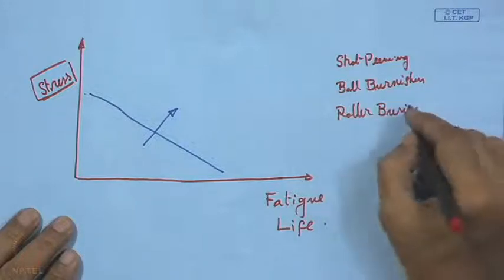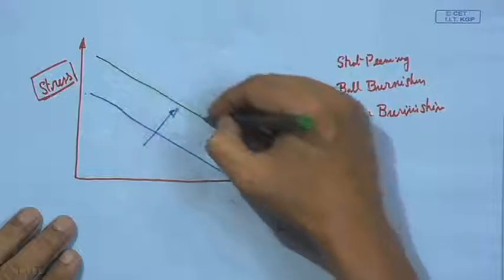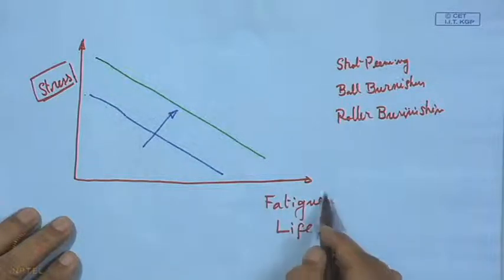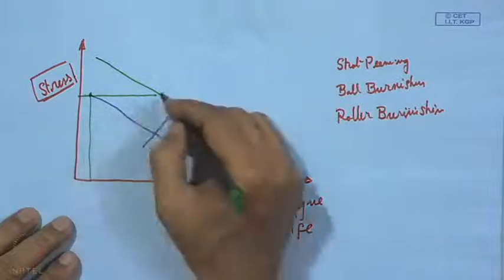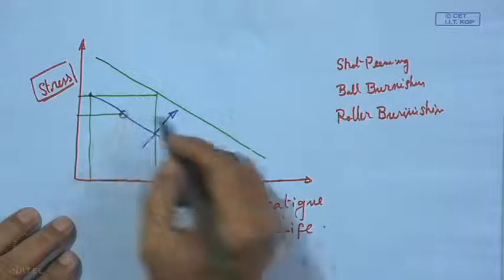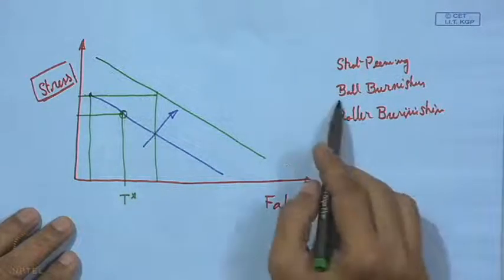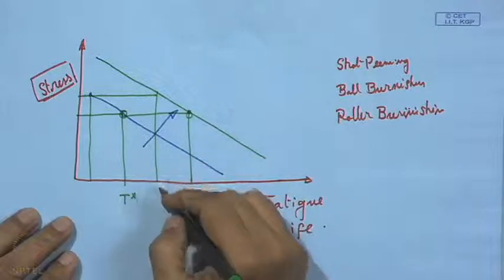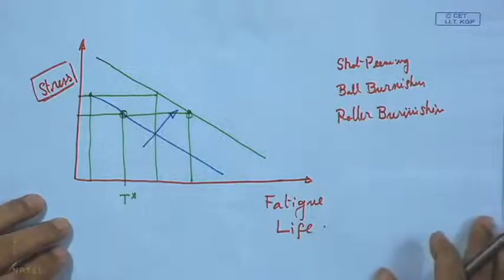By shifting the curve, we get not only a prolongation of fatigue life but also higher stress capacity. At a fixed stress level, fatigue life is extended. Alternatively, with the same fatigue life, the allowable stress level can be increased — which may be required during mechanical application of components subjected to alternating stress.